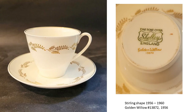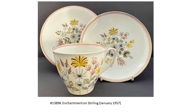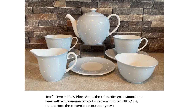Going back now to the Stirling shape items — this Stirling shape from 1956 is just such a wonderful, simple, straightforward shape. I can really picture that on the dining table at the Rose Seidler House. Enchantment on Stirling from 1957 is one of my favourite designs — the beautiful stylised pattern and the colours are gorgeous. And there's a wonderful T-for-two set in the Stirling shape: the colour is moonstone grey with white enamelled spots, from January 1957. Just stunning mid-century modern.